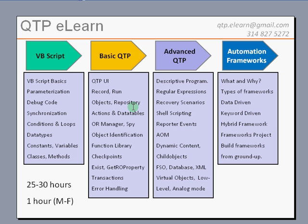Once we understand how VBScript basics work and you are able to parameterize and debug code, we get into how we can repeat certain steps using conditions, if statements, and various loops — what different types of data types we can use, different constant variables, classes, methods, and so on. Then we go into understanding the basic structure of QTP, the UI, how a record and run is done, and all about objects, their properties and repositories.